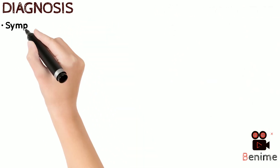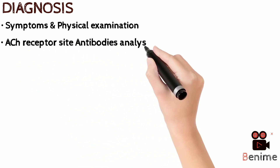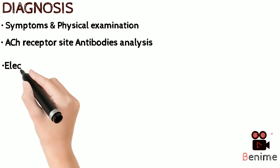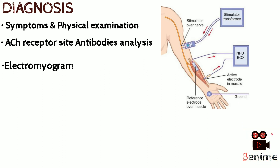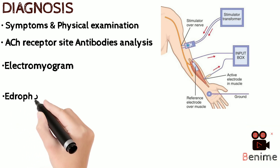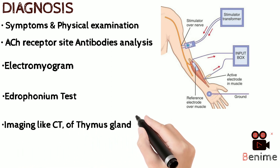Diagnosis of myasthenia gravis is primarily based on symptomatic analysis and physical examination. Acetylcholine receptor antibody analysis and electromyograms are most commonly used for confirmational diagnosis. In the Edrophonium test, we inject the Edrophonium chemical and analyze if symptoms improve — if they do, it proves that the patient suffers from myasthenia gravis.